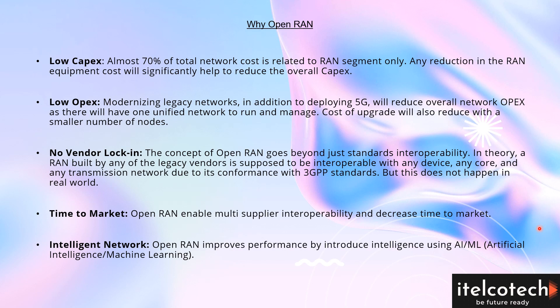Why do we need Open RAN? Since it is not proprietary, there will be less cost, and the radio access network contributes to about 70% of the total network cost for any telecom operator. There will be huge CAPEX savings. In proprietary hardware and software, there is associated AMC and upgrade cost, so OPEX is very high in conventional RAN — that has been reduced in Open RAN. Additionally, there is no vendor lock-in, time-to-market is lower because material can be procured from multiple suppliers, and intelligence can be added using machine learning or AI.